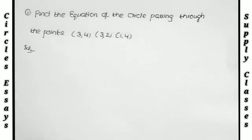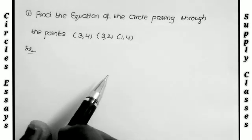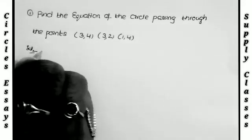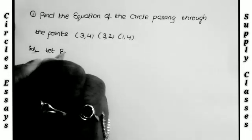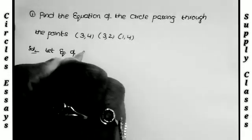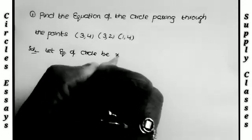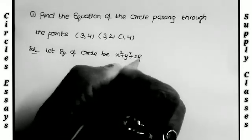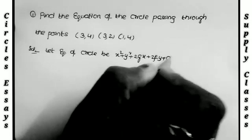The first question — a very, very important 7-mark and well-known question. Find the equation of the circle passing through the points (3, 4), (3, 2), and (1, 4). How to solve this question? First, we take the equation of the circle in standard form, that is x² + y² + 2Gx + 2Fy + C = 0. We take that as the equation of the circle.